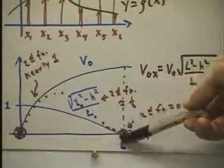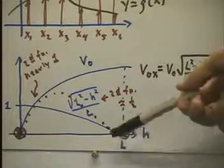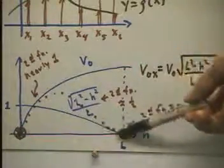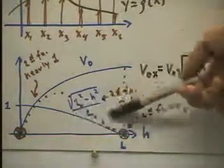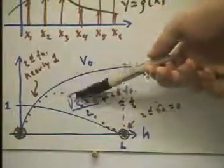Then, as we approach h equals l, this function approaches 0, so that the product of these two functions, since this one approaches 0, is going to approach 0. And we're going to get a graph something like this.